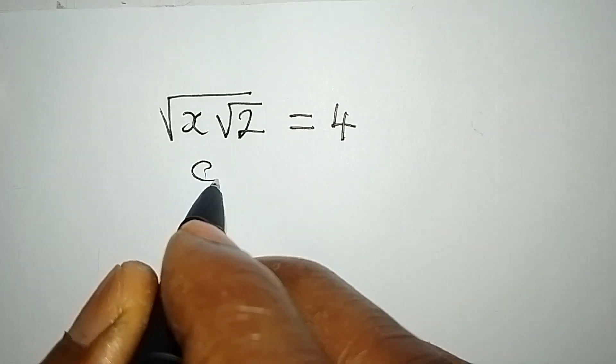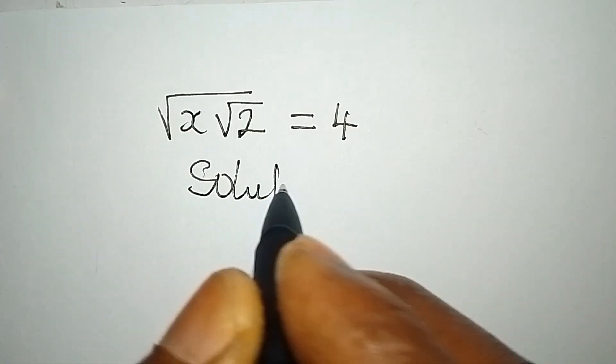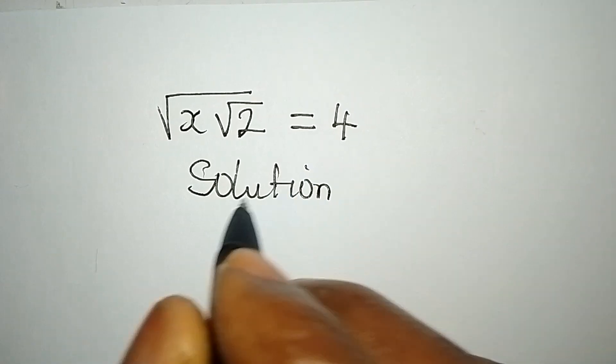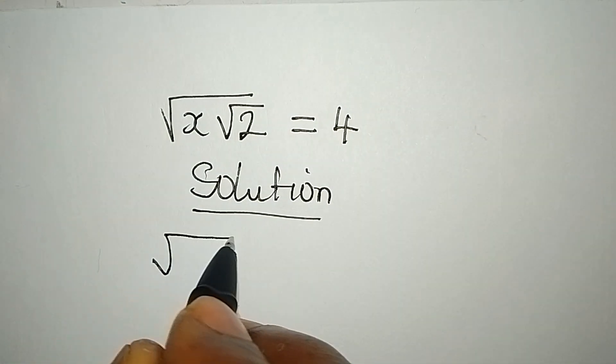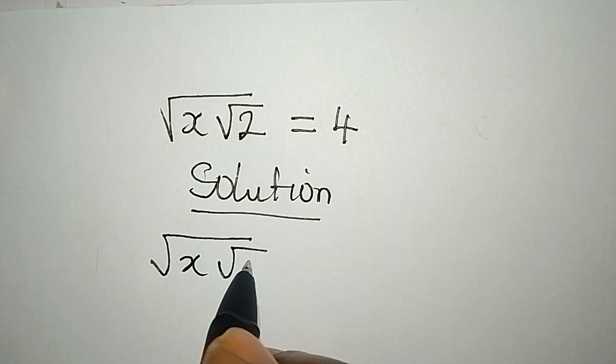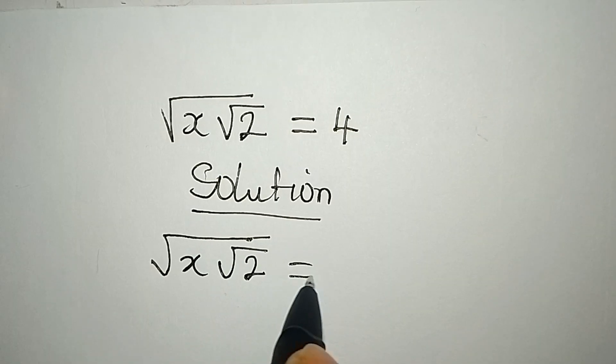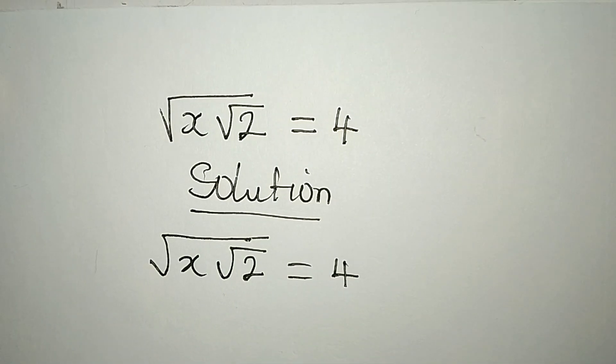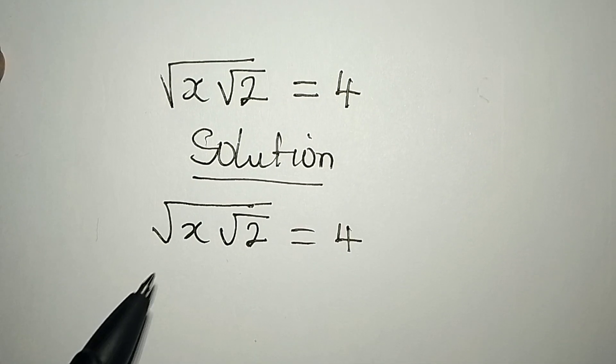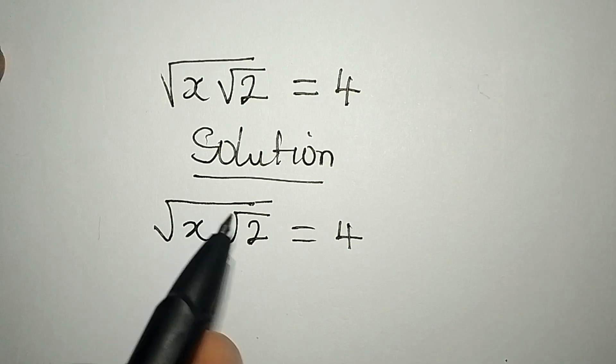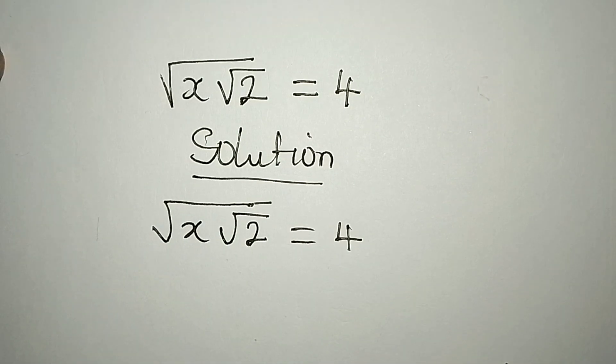Hello everyone, let's look at this problem very quickly. Square root of x square root of 2 equals 4. Now some persons find it really difficult to remove square root, but it is simple.